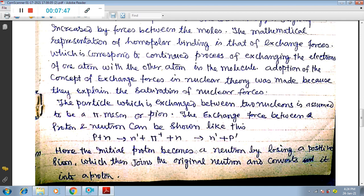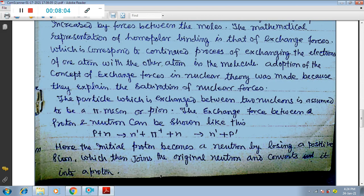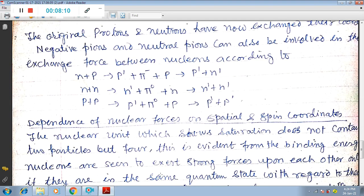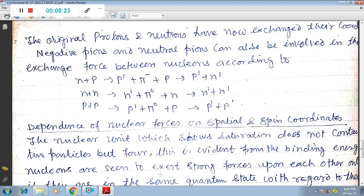Here the initial proton becomes a neutron by losing a positive pion, which then joins the original neutron and converts it into a proton. The original protons and neutrons have now exchanged their coordinates.